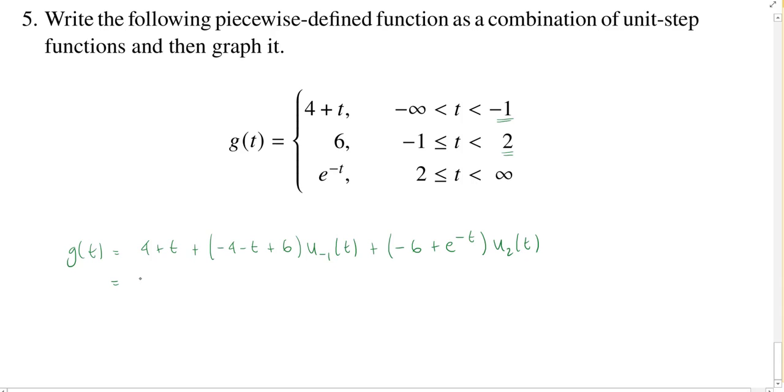So a little simplification. We have 4 plus t. And then negative 4 plus 6 is 2, so I'll have 2 minus t times u_{-1}(t). And then there's not much to do here. I could write this as e to the negative t minus 6. It doesn't really matter. We have written it now as a combination of unit step functions.